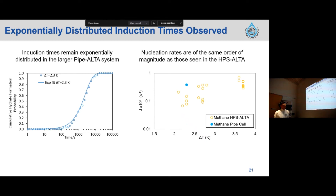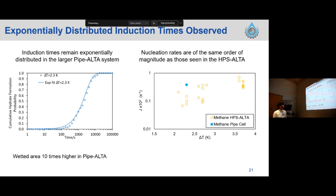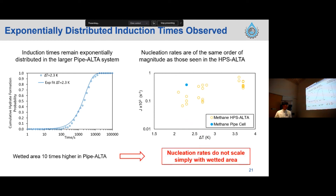From this distribution, we can extract the nucleation rate J and compare with the HPS-Alta data. In this nucleation plot, the blue represents methane hydrate nucleation rate in the pipe cell, while the yellow represents methane hydrate nucleation rate in the HPS-Alta. The nucleation rate in the pipe cell is a little bit higher than the HPS-Alta system, but they are of the same order of magnitude. Things are still early stage, but there is one specific interesting result: although the nucleation rate is of similar magnitude to HPS-Alta, the wetted area is 10 times higher in the pipe cell. This means the nucleation rate does not scale simply with the wetted area. We expect that with more experiments, more useful information will come out.